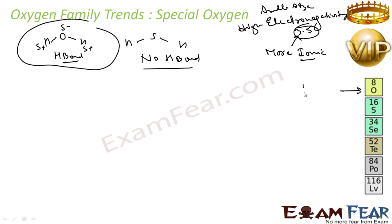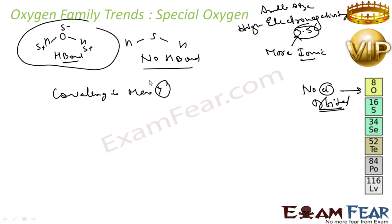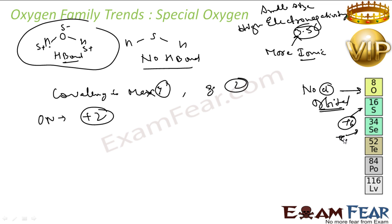There is an absence of d-orbitals in oxygen, which gives it another special property — it limits the covalency to a maximum of 4, though generally it is 2. For example, in water the covalency is 2. The maximum oxidation number for oxygen is +2, whereas for sulfur it can go up to +6. Sulfur has a covalency of 6, but oxygen's maximum covalency is 4. Oxygen is also a gas while the other group elements are solids.